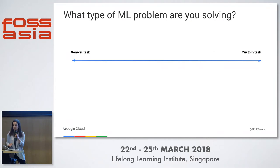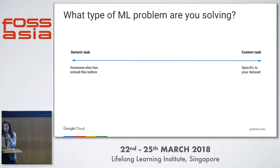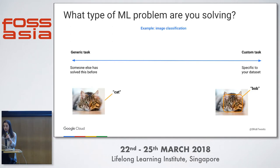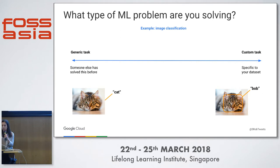When I get started solving a machine learning problem, the first thing I like to think about is the type of problem I'm solving. Am I doing something generic that someone else has solved before, or something more custom that's very specific to my data set? In terms of image classification: if I just want to know that an image has a cat in it, lots of people have built models to do that already, so I can utilize an existing model. But if I want to differentiate a specific cat named Bob from other cats, I'll have to train a custom model — showing it labeled images so it can differentiate between them. I'd also need a custom model to return a bounding box of where the cat is in the image.